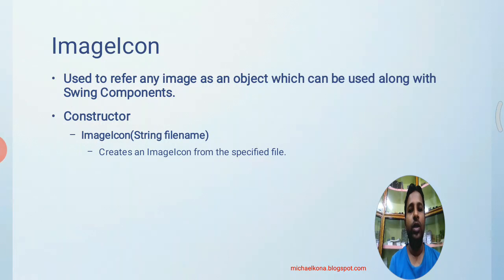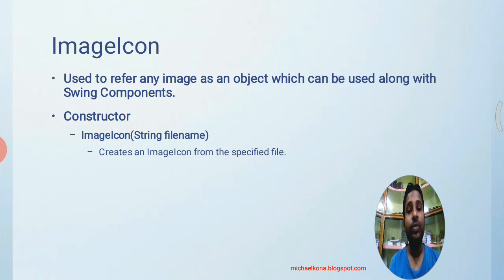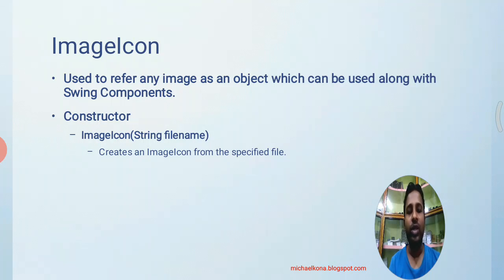Let us discuss component options in Swing. The first one is ImageIcon. ImageIcon is a class in Swing. When you create an object for this class, that object can refer a real-time image. ImageIcon will hold a real-time image. If you want to place an image in any Swing components like JLabel, JButton, JCheckbox, or JRadioButton, you have to use ImageIcon. The important constructor accepts the file name of the image as a string.